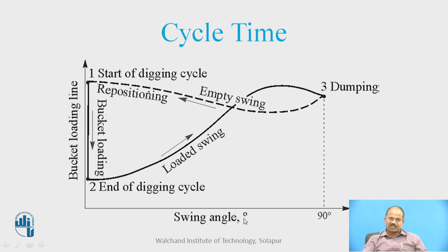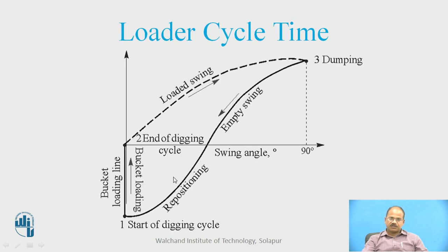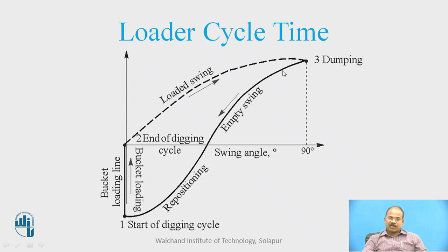The swing angle is shown as zero at one end and 90 degrees at the other, and the bucket loading time will be a combination of all these operations. In the vertical frame, the digging cycle begins with the bucket being dragged onto the vertical surface. It gets filled, the loaded bucket swings upward, reaches the top, the material is dumped at the given location, and then the empty bucket is brought back down to the end of the digging position. These are the basic operations for the drag line in both horizontal and vertical directions.